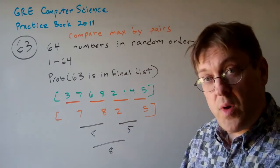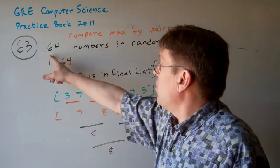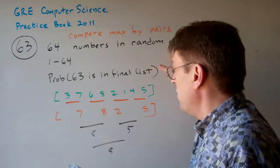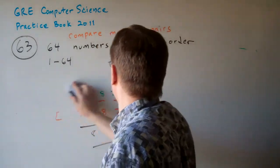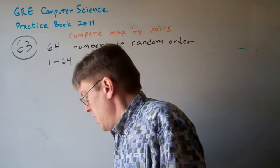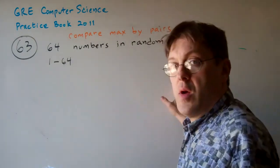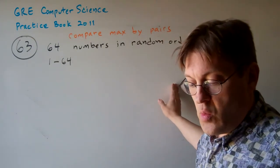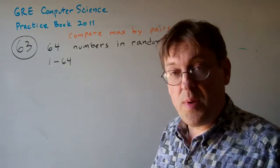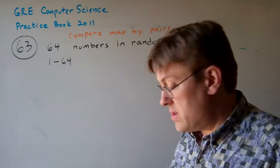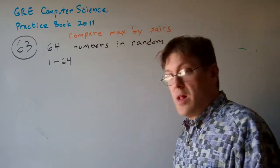So what the question asks is, suppose that the elements of the initial list is 1 through 64 in random order. So we have the numbers 1 through 64 in random order in a list. What's the probability that the number 63 will appear in the final two-element list? That's basically the probability that 63 will last all the way to the end.